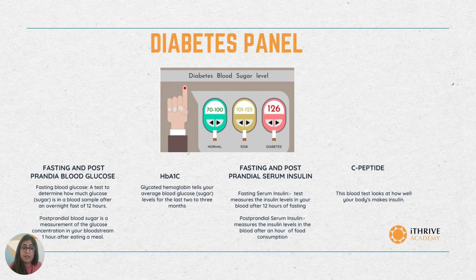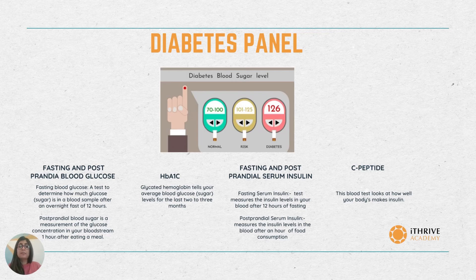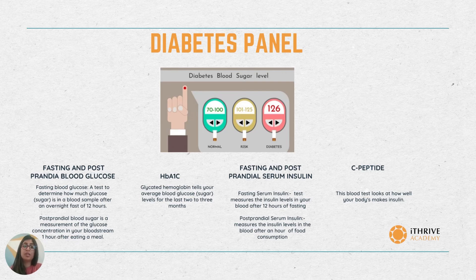Now, the diabetes panel. These are the parameters which come under the diabetes panel. Fasting blood sugar is a test that determines how much sugar is in the blood sample after an overnight fasting of 12 hours. Post-prandial blood sugar, also known as PP blood sugar, is a measurement of glucose concentration in your bloodstream one hour after having a meal.